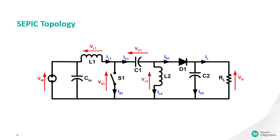Since the average voltage across C1 is VIN, the output voltage VO is VS1 minus VIN.